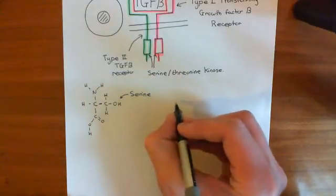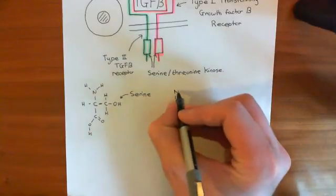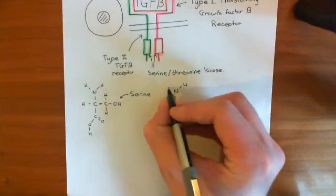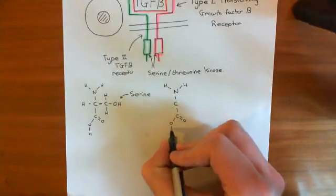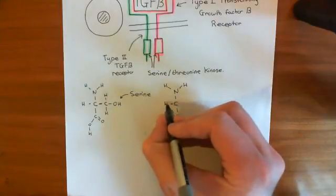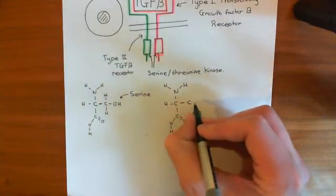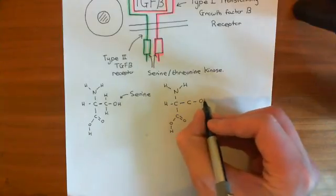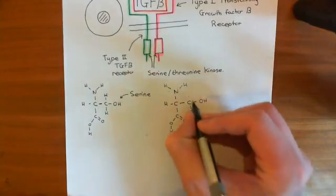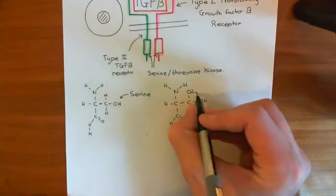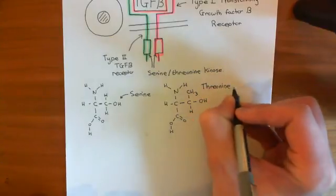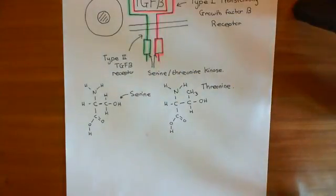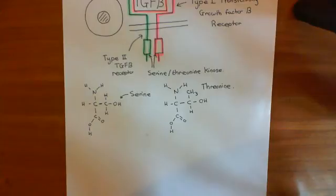In the case of threonine, it's slightly different. You again have the amino group and the carboxyl group coming off the alpha carbon, along with a hydrogen. The R group again has a carbon with a hydroxyl group and a hydrogen, but then there's also a methyl group coming off it. So threonine is just serine but with an extra methyl group — these two amino acids have a very similar R group.